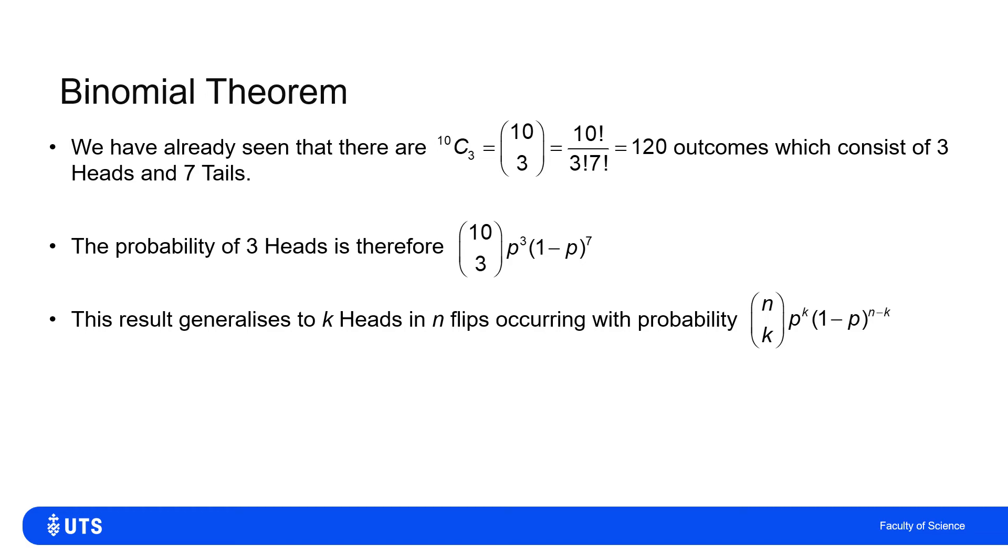And in general, if I've got k heads in n flips, then I would say I've got n choose k, times the chance of getting k heads in some order would be p to the k times the chance of getting n minus k tails in some order would be one minus p to the n minus k.